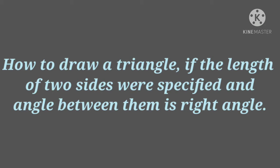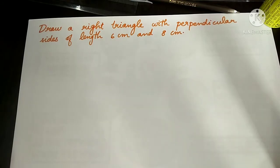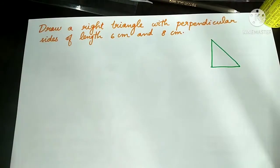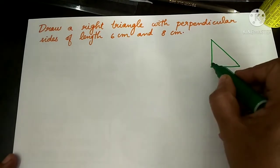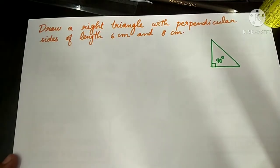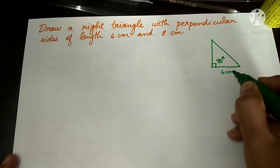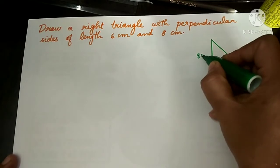Next topic: how to draw a triangle if the length of two sides is specified and the angle between them is a right angle. Next question: draw a right triangle with perpendicular sides of length 6 cm and 8 cm. Before drawing the figure, let us draw a rough figure. One of the angles is 90 degrees. One perpendicular side is 6 cm and the other side is 8 cm.